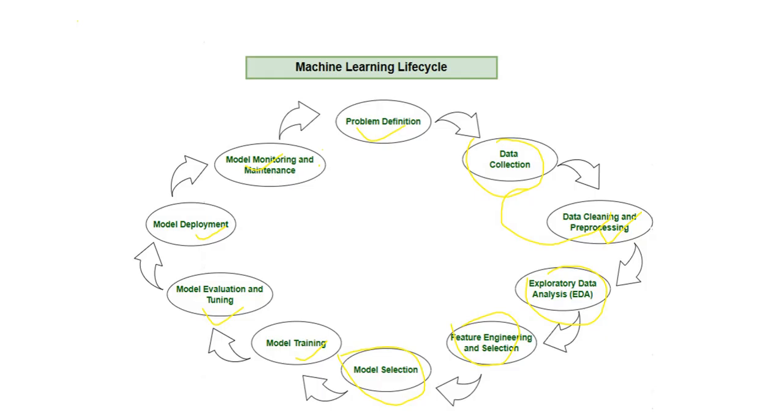To conclude this slide, the machine learning lifecycle is a continuous loop: define, collect, clean, explore, engineer, select, train, evaluate, deploy, monitor, and then repeat. This ensures the machine learning system stays accurate, relevant, and aligned with real world changes.